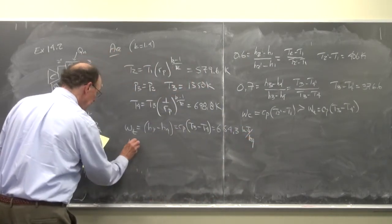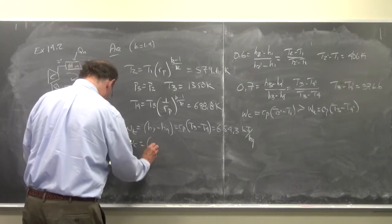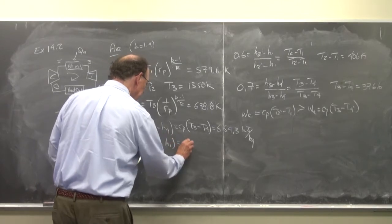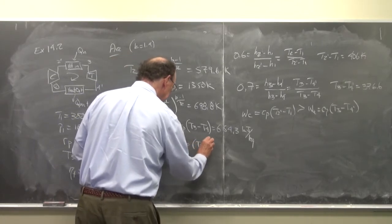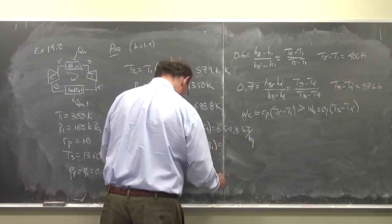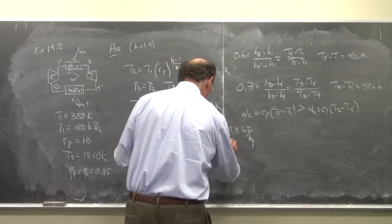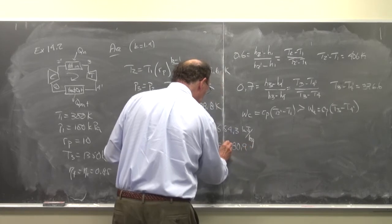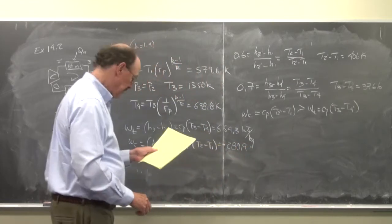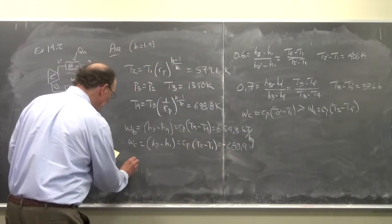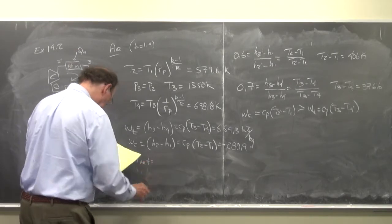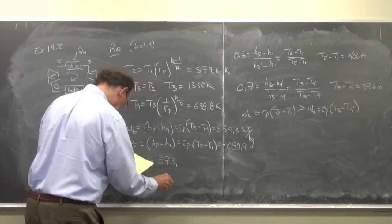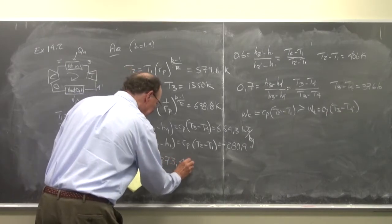wc is equal to h2 minus h1, c sub p times T2 minus T1, so that's equal to 280.9. And we know it's minus because it's work going in, so w net is equal to 373.4 kilojoules per kilogram.